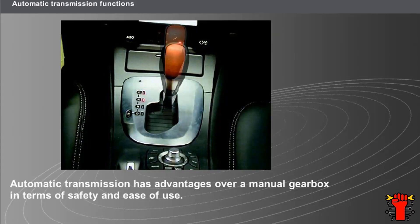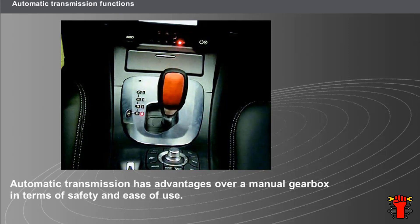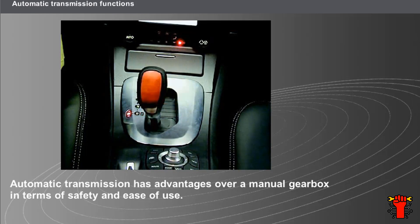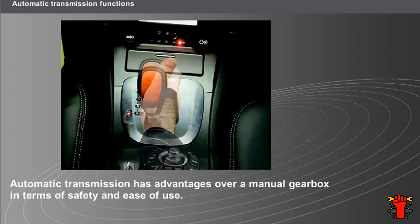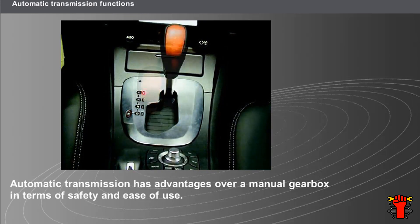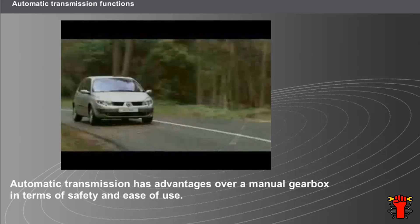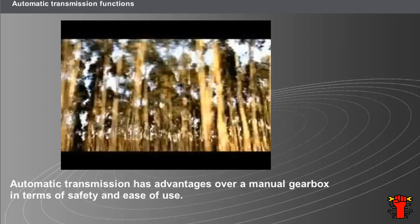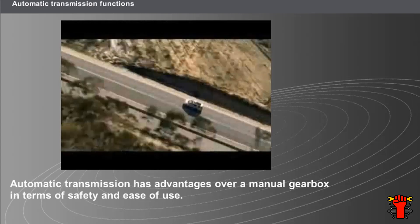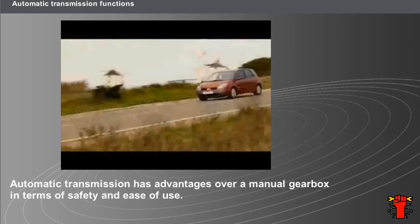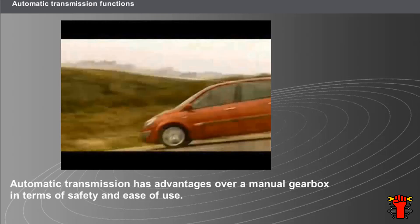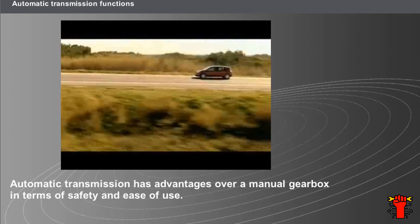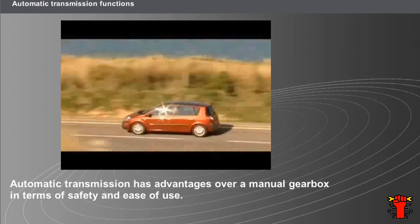Automatic transmission has advantages over a manual gearbox in terms of safety and ease of use. It changes gear automatically at the most appropriate speed without a break in torque transmission, making driving easier. The vehicle pulls away smoothly in all traffic conditions. Automatic transmission requires fewer movements, making driving more restful and allowing the driver to be more vigilant.